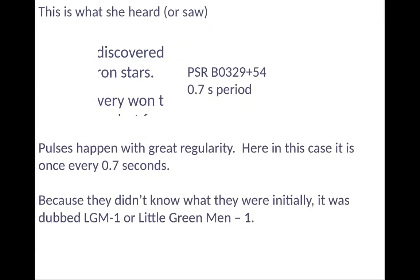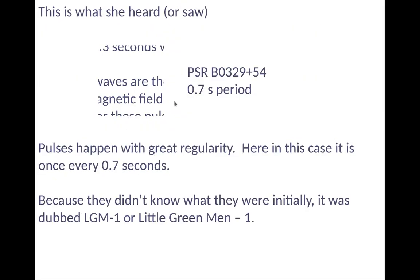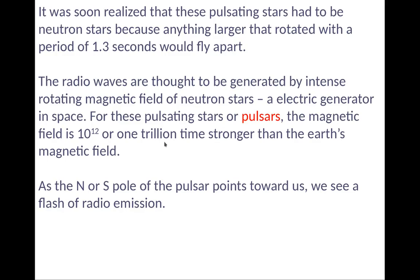So what she heard, she heard a regular pulse, this is PSR-B0329-54, has a period about a little less than a second, 0.7 seconds. So the pulses happen with great regularity, about 0.7 seconds. In fact, they didn't know what they were listening to initially, so they actually called it little green one, LGM1. It was soon realized that these pulsating stars had to be neutron stars, because anything larger than that would rotate with a period of 1.3 seconds would just simply fly apart.